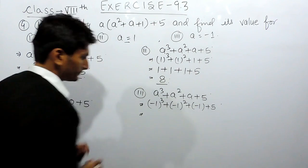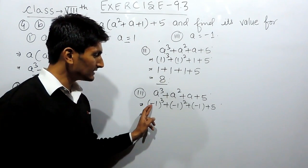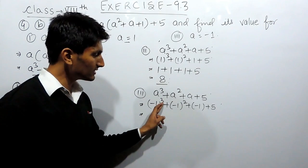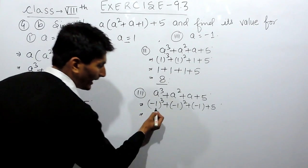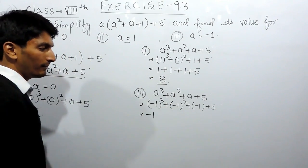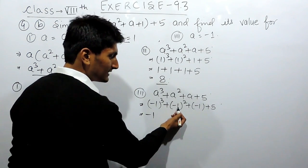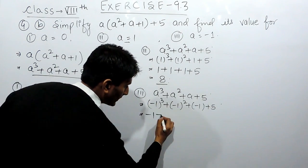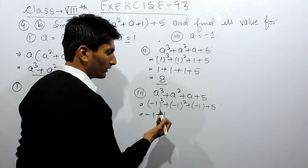Now let's solve this. We know that whenever the sign is negative and if the power is odd, the sign will remain as it is. And 1 cubed will remain 1, so this will become minus 1. And when the sign is negative and if the power is even, the signs get converted. So this will become plus 1 because 1 squared is also 1.